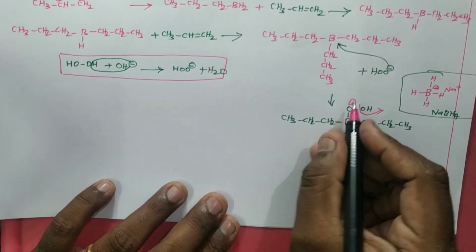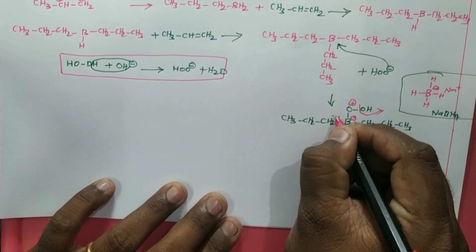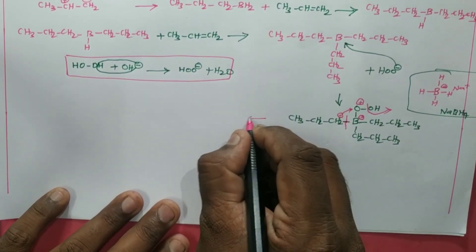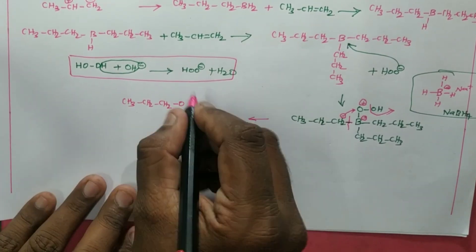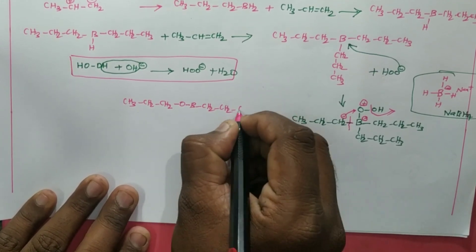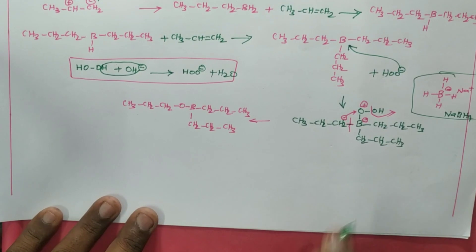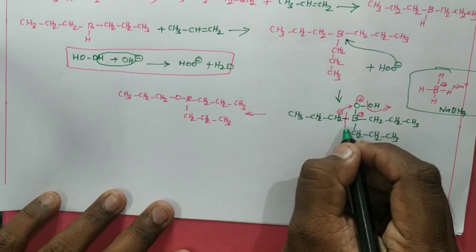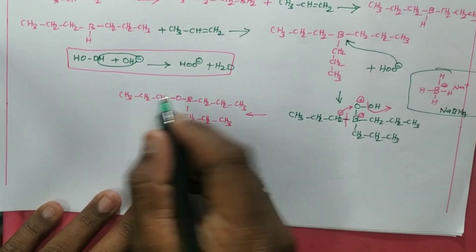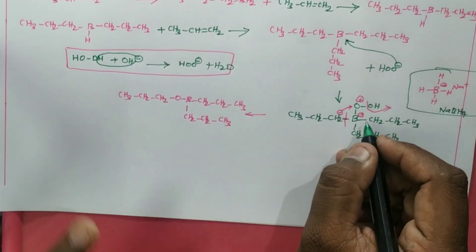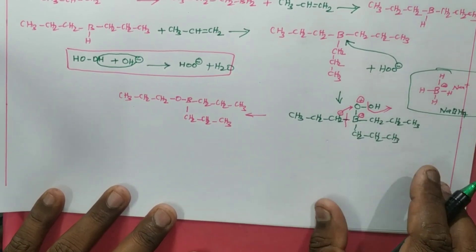When OH⁻ leaves, the bond breaks and the electrons move as a negative charge, forming a complex: CH3-CH2-CH2-CH2-O-B with CH2-CH2-CH2-CH3 and another CH2-CH2-CH2-CH2-CH3 group. The alkyl group attached to boron can be converted into an alkoxide group. Carbon is more electropositive relative to boron in this context, so a shift takes place, and with further OOH⁻ attacks, every boron–carbon bond is converted to a B–O⁻ (alkoxide).